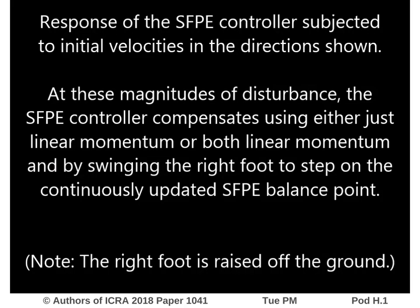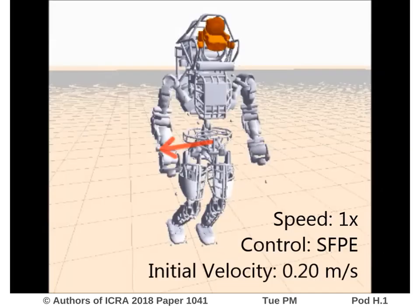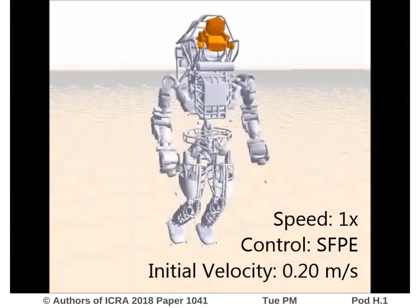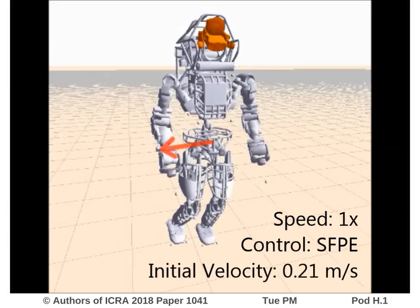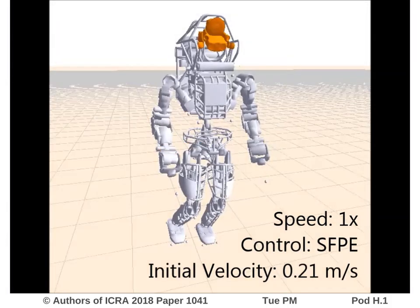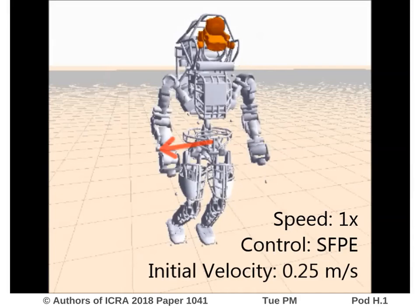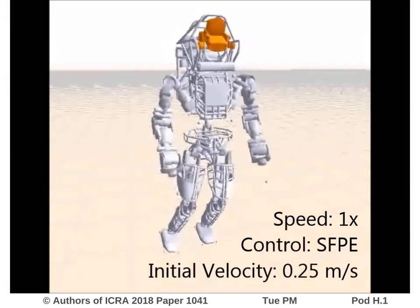To show the performance of the SFPE-based controller for a variety of conditions, we've generated initial disturbances in several directions and magnitudes. The inclusion of the SFPE in the control loop enables leaning and stepping approaches to balance, with only minor changes to the controller. The control inputs generated using the SFPE feedback loop also have continuous dynamics, unlike many other balance point methods.